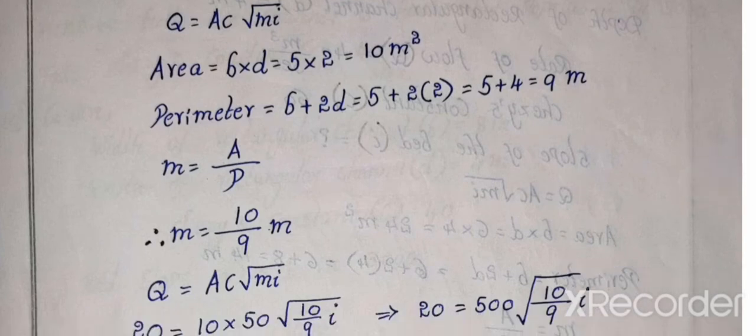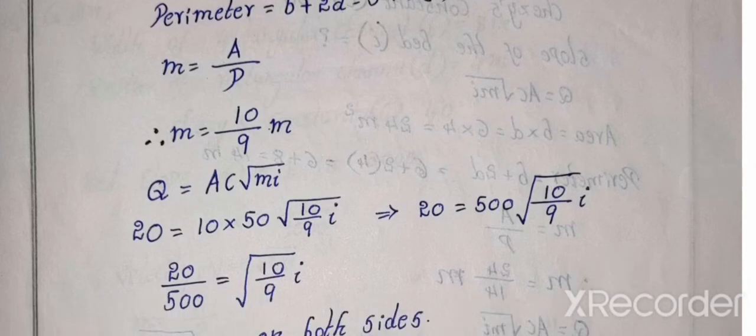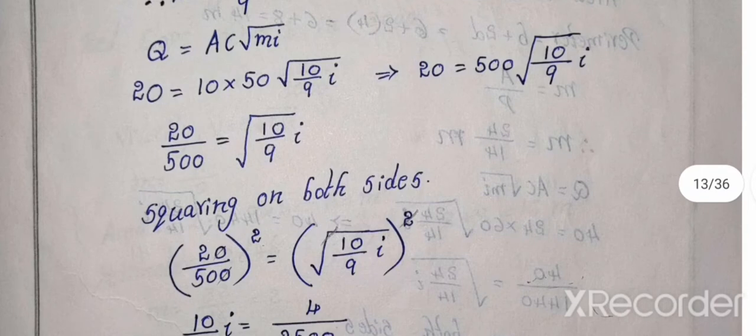M equal to A by P, 10 by 9. So m equal to 10 by 9 meters. Here Q equal to AC root Mi formula. So formula substitution. Q value is 20, A value 10, C value 50, root M value 10 by 9, i value calculation. Finally, 20 equal to 10 into 50, 500 root 10 by 9 i.